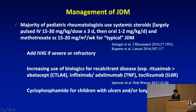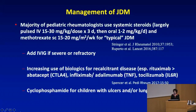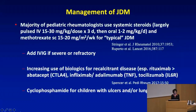For management, I'll mention the use of largely pulsed IV steroid, methotrexate for typical JDM, with addition of IVIG for severe refractory disease, and increasing use of biologics for recalcitrant disease — especially rituximab. Cyclophosphamide has toxicities we worry about, but is still used for lung disease and ulcers. The biologics are coming in more and more as safer alternatives.